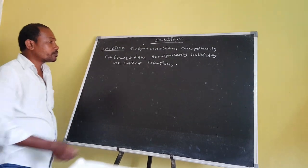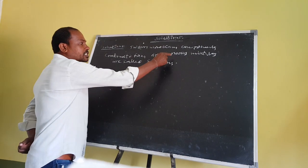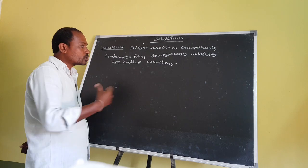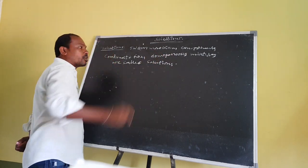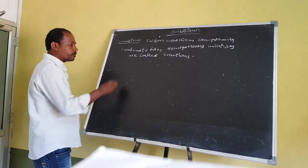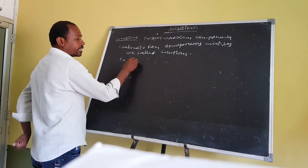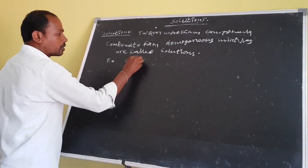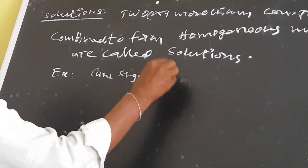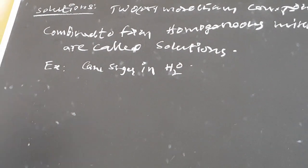So, what is the meaning of homogeneous feature? Homogeneous feature means it looks like only one layer. These type of features are called homogeneous features. For example, sugar in water.